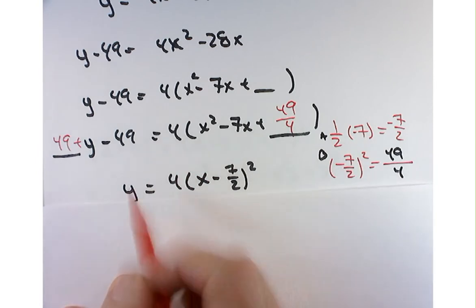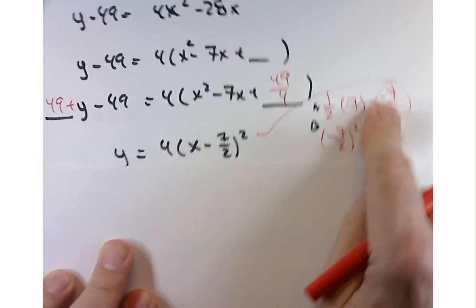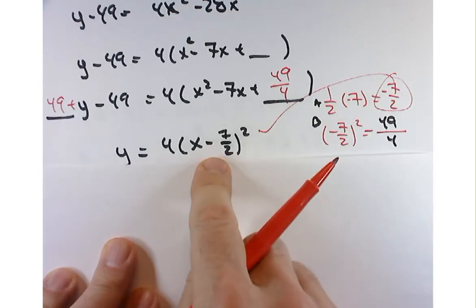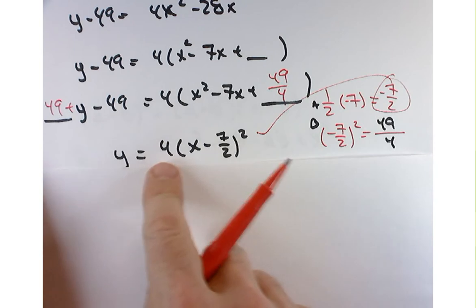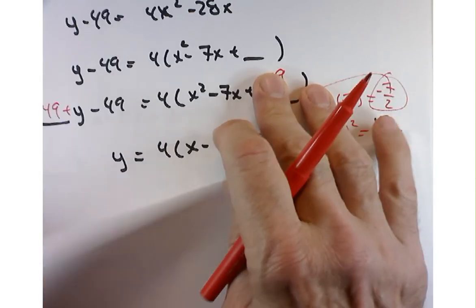And on the right-hand side, this, that negative 7 halves, is what goes in here. So it's really y equals 4 times x minus 7 halves squared. So hey, there's my vertex. Great.